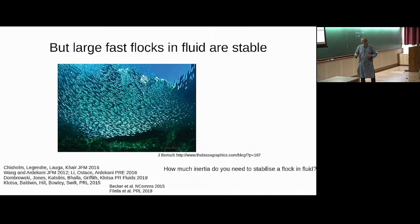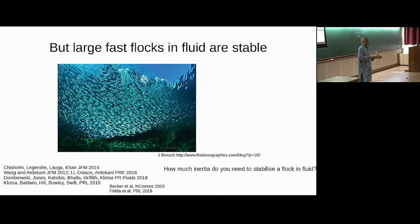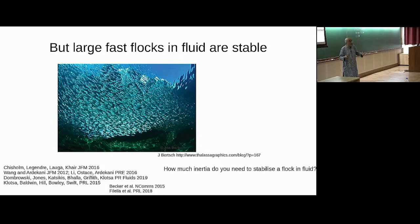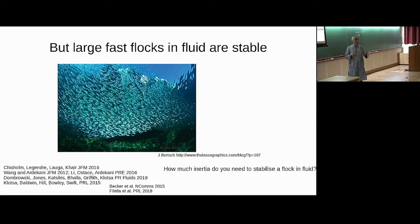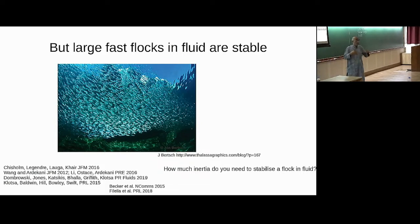On the other hand, if you are in a regime definitely not described by the Stokes equation — working at speeds and length scales such that the Reynolds number at the scale of one organism is order one or much larger — it seems perfectly possible to make coherent flocks of swimmers. The laws of physics that told you stable flocks couldn't exist at small scales somehow tell you they can exist at large scales with fast swimmers.